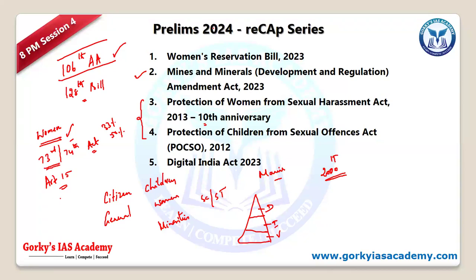Under the 106th Amendment, one-third reservation is provided at Lok Sabha, State Legislative Assembly, and the Union Territory of Delhi. Jammu and Kashmir has a different arrangement — it was included only later and is not in the original bill. This is one of the main tricky areas: if a question says the Women Reservation Act 2023 reserves seats for women in Delhi, Puducherry, and Jammu and Kashmir — that statement is wrong.